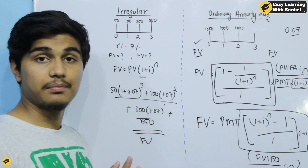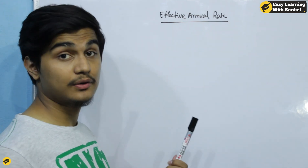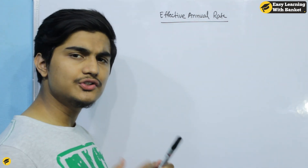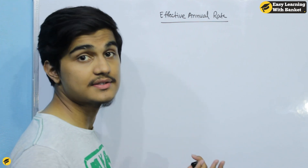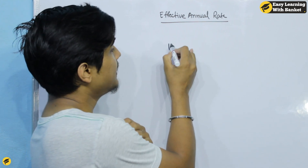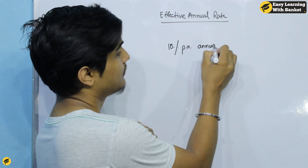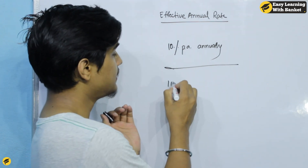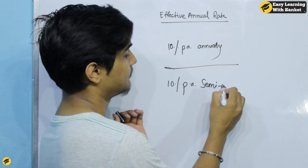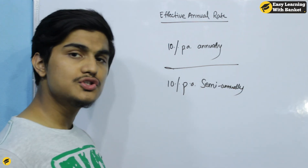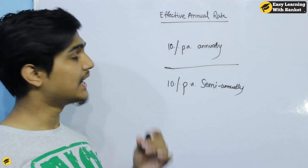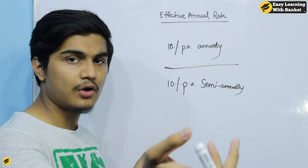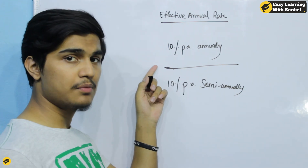This covers the basic annuity formula for regular and irregular cash flow — for which period is the present value or future value. Now if you have a good grasp of this chapter, we move to the Effective Annual Rate (EAR). The EAR is used in many cases where there are two or more compounding periods — for example, 10% per annum compounded annually.